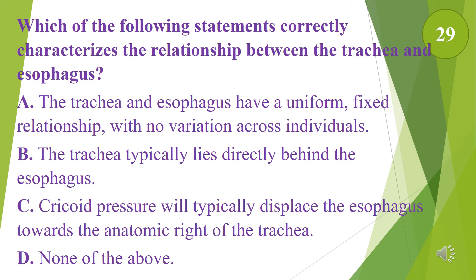Which of the following statements correctly characterizes the relationship between the trachea and esophagus? A. The trachea and esophagus have a uniform, fixed relationship with no variation across individuals. B. The trachea typically lies directly behind the esophagus. C. Cricoid pressure will typically displace the esophagus towards the anatomic right of the trachea. D. None of the above. The answer is D, none of the above.